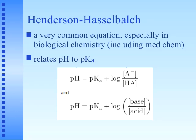In medicinal chemistry it's very important to relate pH to pKa, and to do that we use the Henderson-Hasselbalch equation. This is a very common equation, especially in biological chemistry including med-chem. The Henderson-Hasselbalch equation is: pH = pKa + log([A−]/[HA]), or equivalently, pH = pKa + log([base]/[acid]).